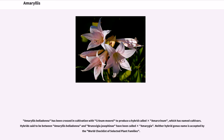Amaryllis belladonna has been crossed in cultivation with Crinum moorei to produce a hybrid called ×Amarcrinum, which has named cultivars. Hybrids said to be between Amaryllis belladonna and Brunsvigia josephinae have been called ×Amarygia. Neither hybrid genus name is accepted by the World Checklist of Selected Plant Families.